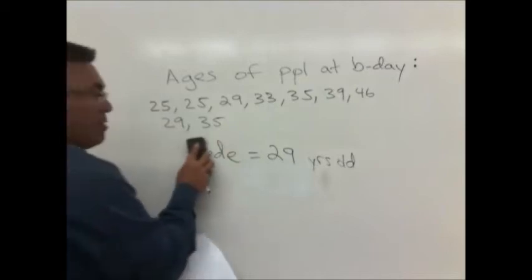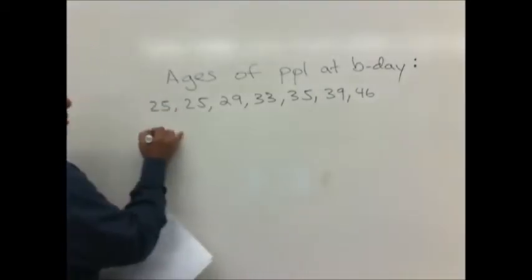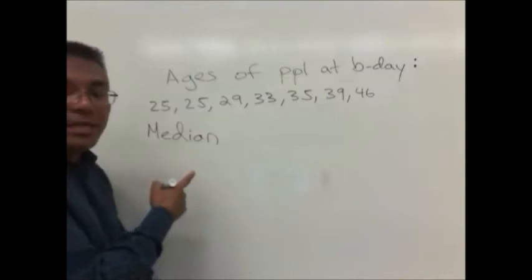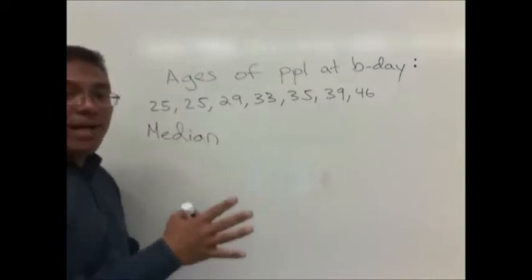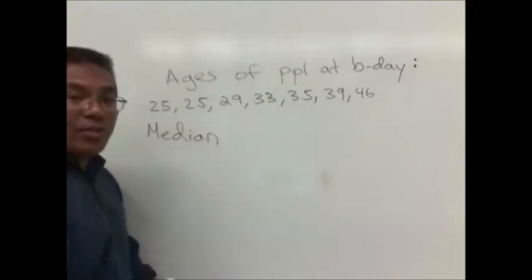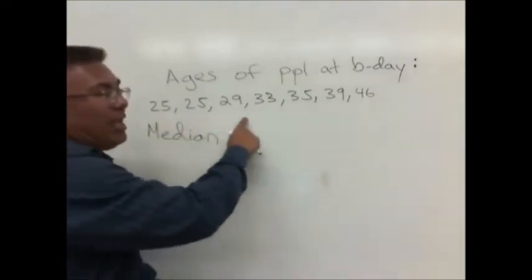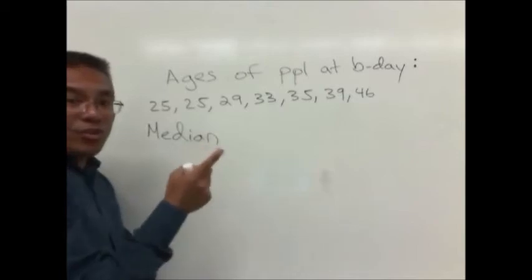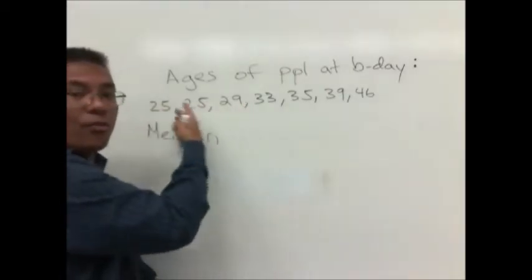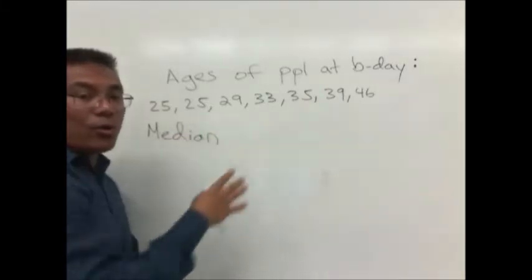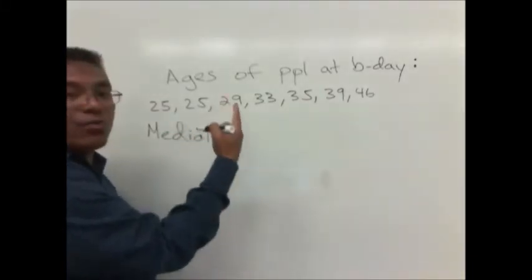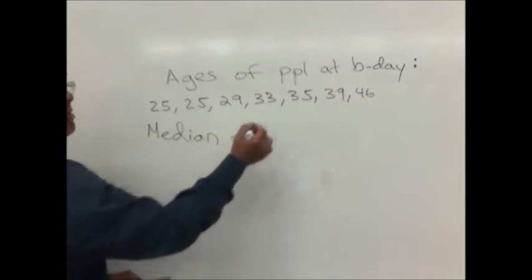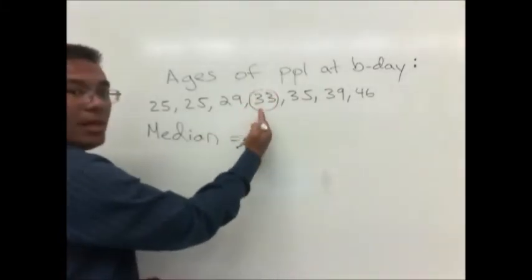So let's move on to the next measure of center: median. When we talk about median, we're talking about the middle value, the value that's in the center of our data range. For instance, these numbers, these ages, have been placed in order already from lowest to highest.